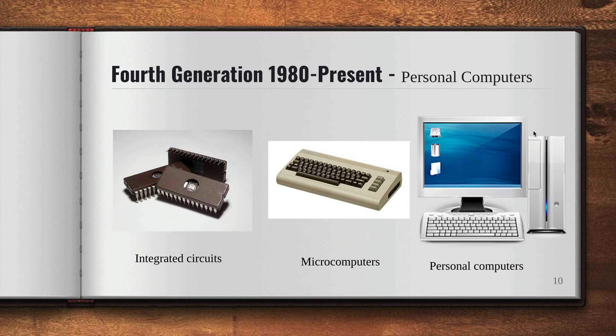The fourth generation is the current generation, from 1980 up until present. Personal computers were easy to create with the development of large-scale integrated circuits. Microcomputers were cheaper than mini computers, making it possible for individuals to own them. The advent of personal computers led to the growth of networks, which created network operating systems and distributed operating systems. We will discuss in detail what network and distributed operating systems are in depth.